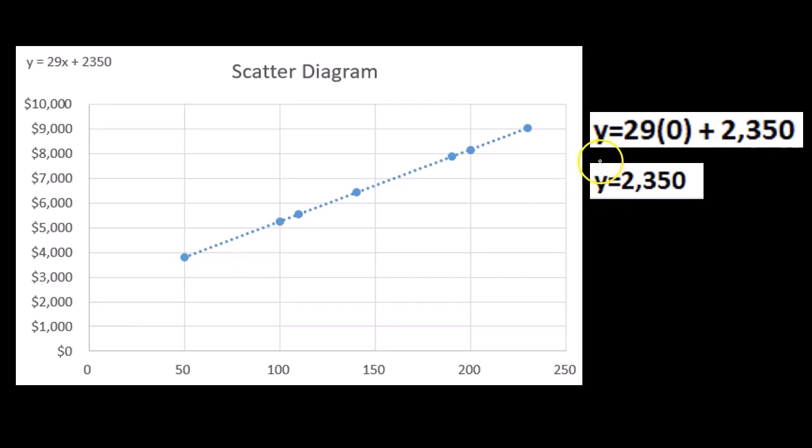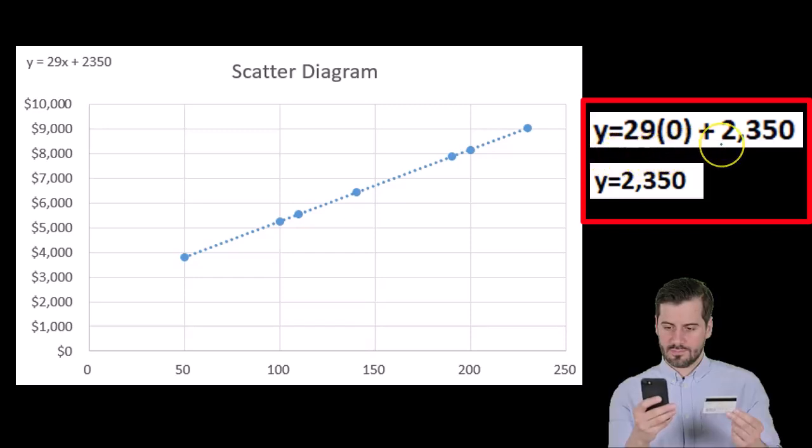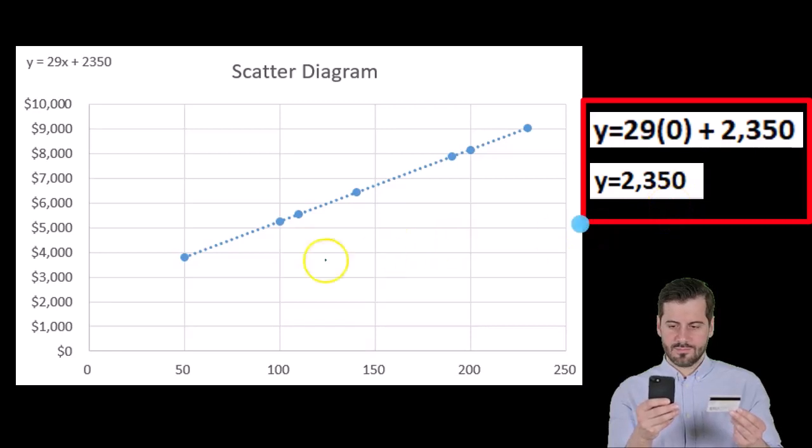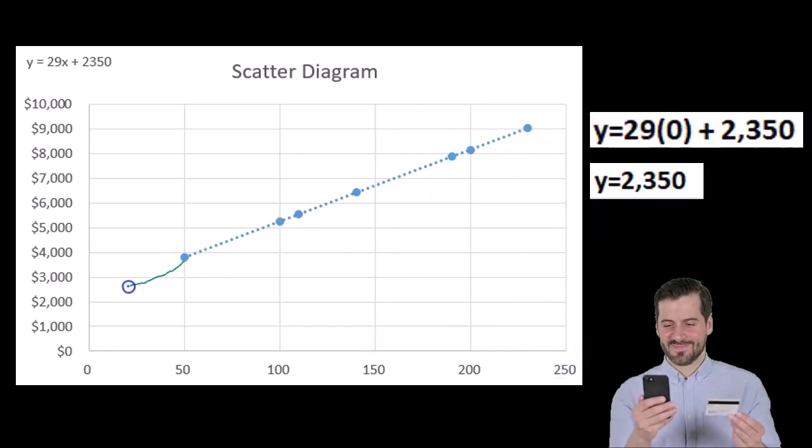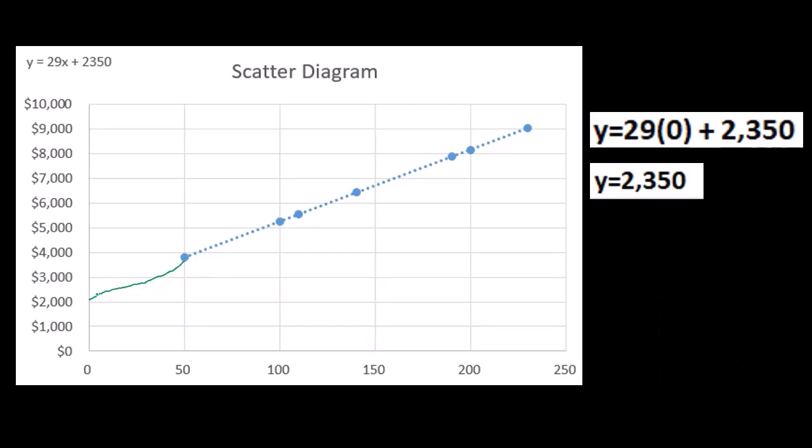So how do we do that? We set the x to be 0 in the line equation, and then we solve the equation. So y equals 29 times 0 plus 2,350. Y equals 2,350. So in other words, if we were to extend this line out, then it's going to hit the vertical axis at 2,350. And that then is what we would think would be the fixed portion of this mixed cost.